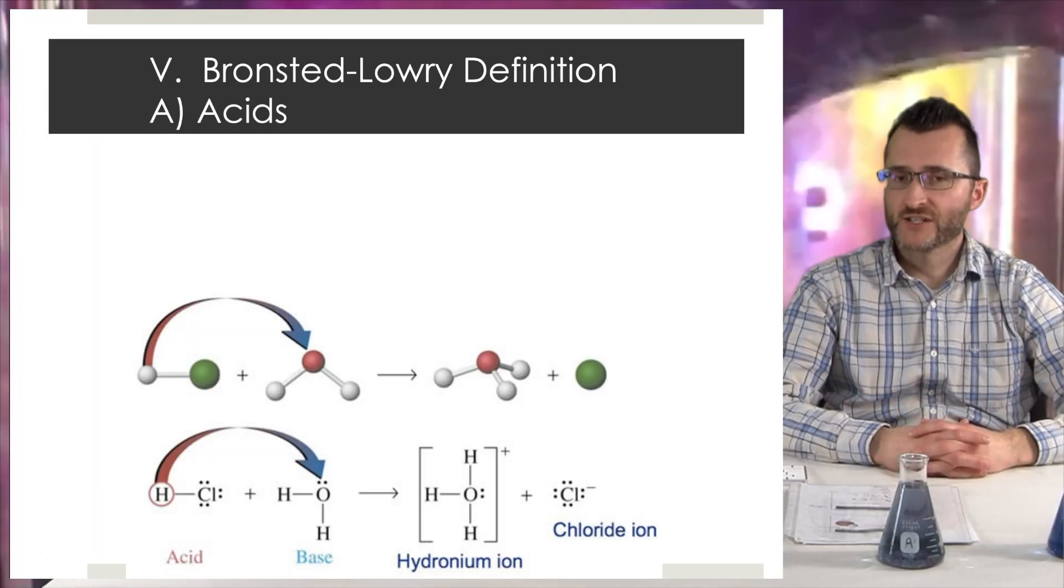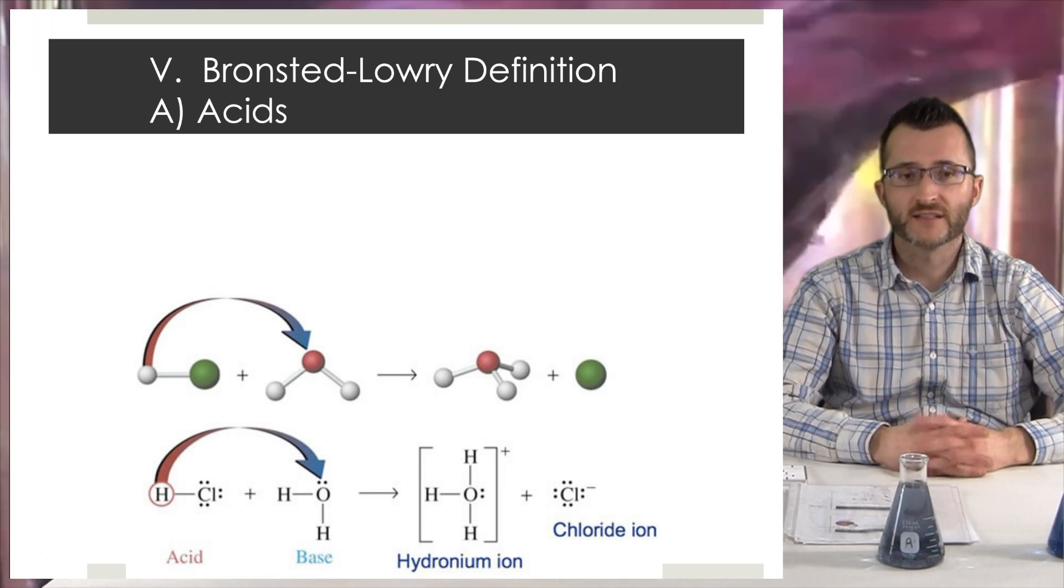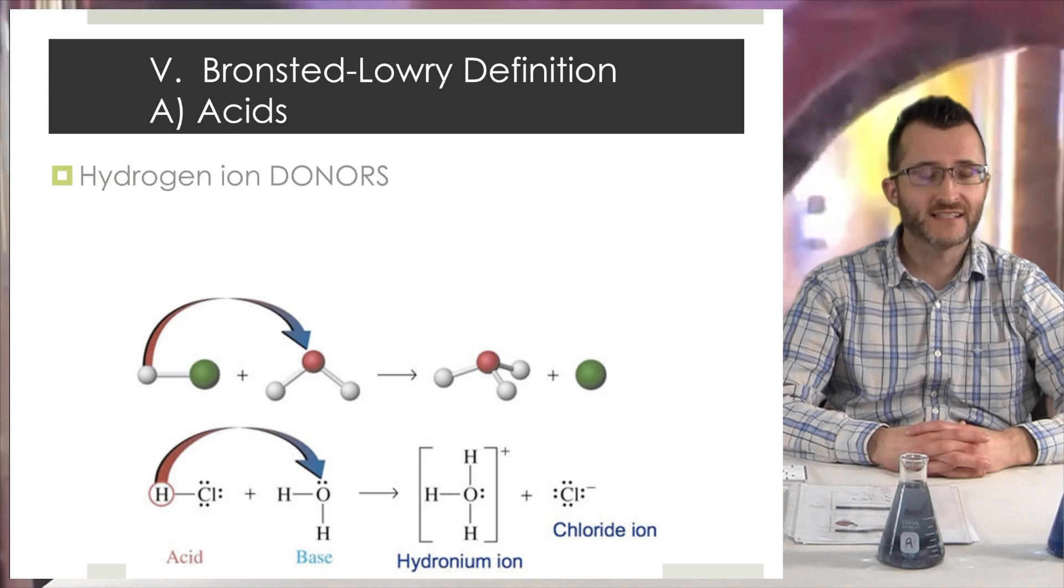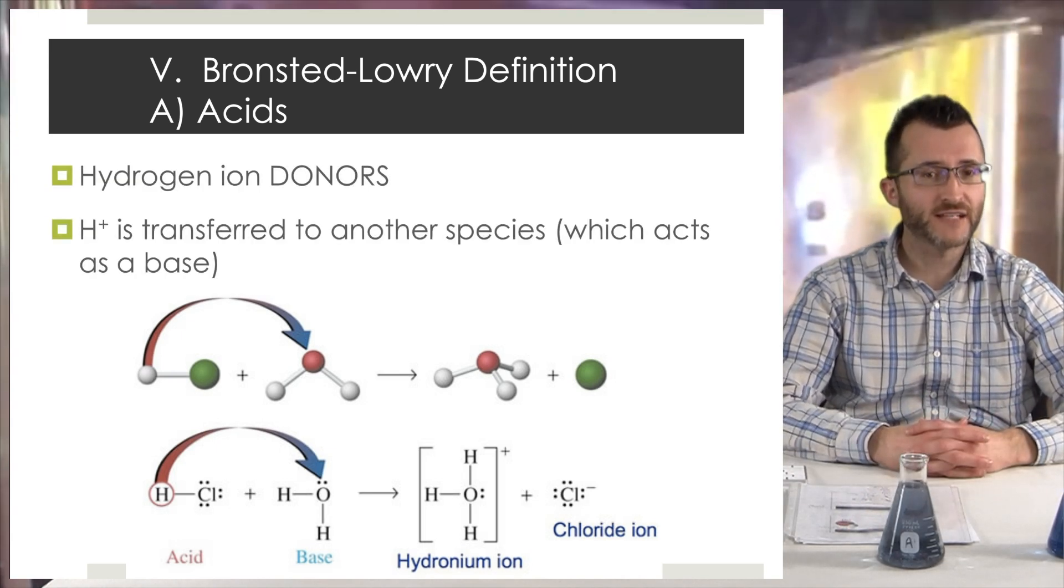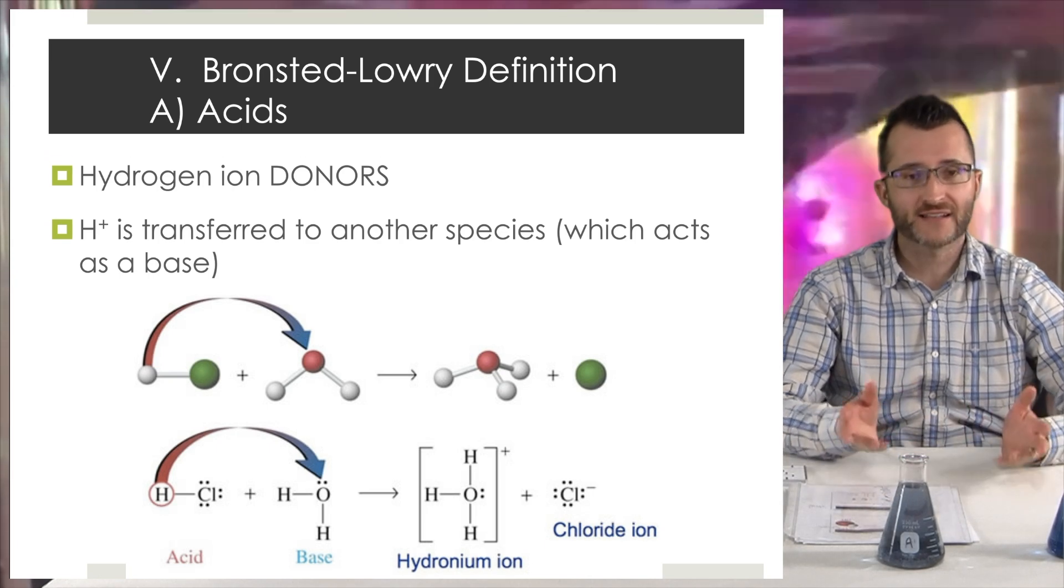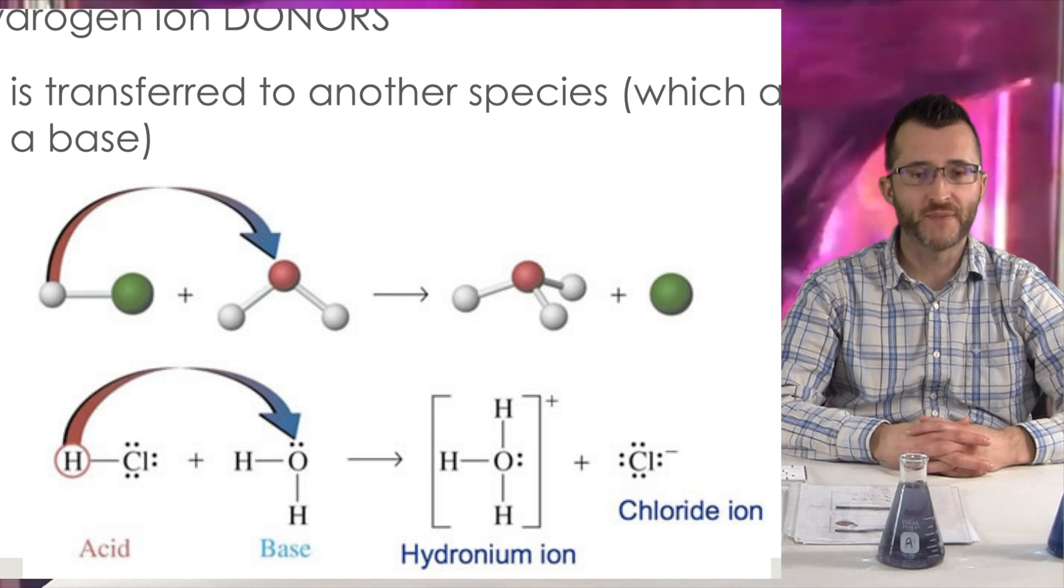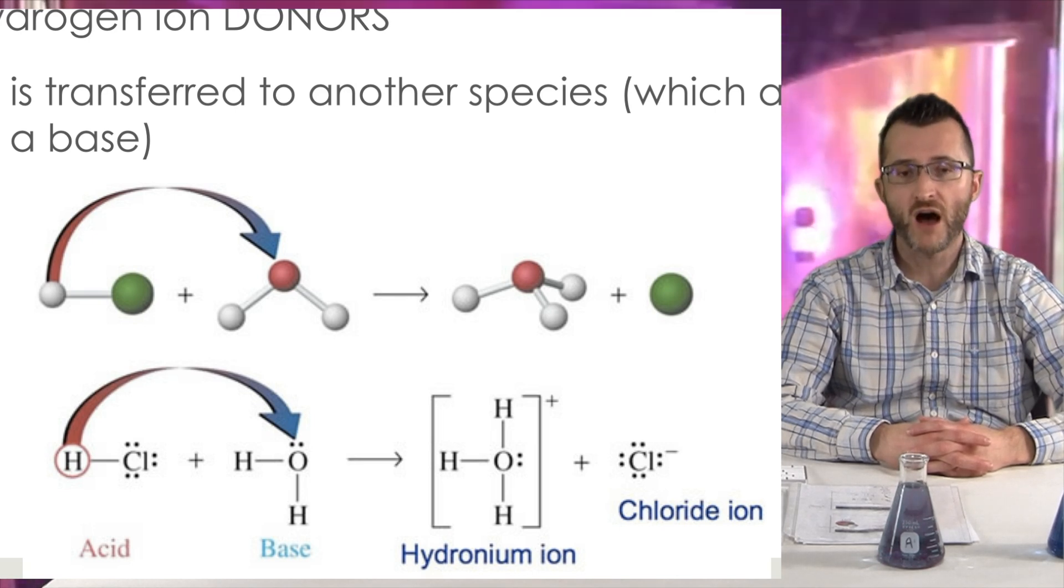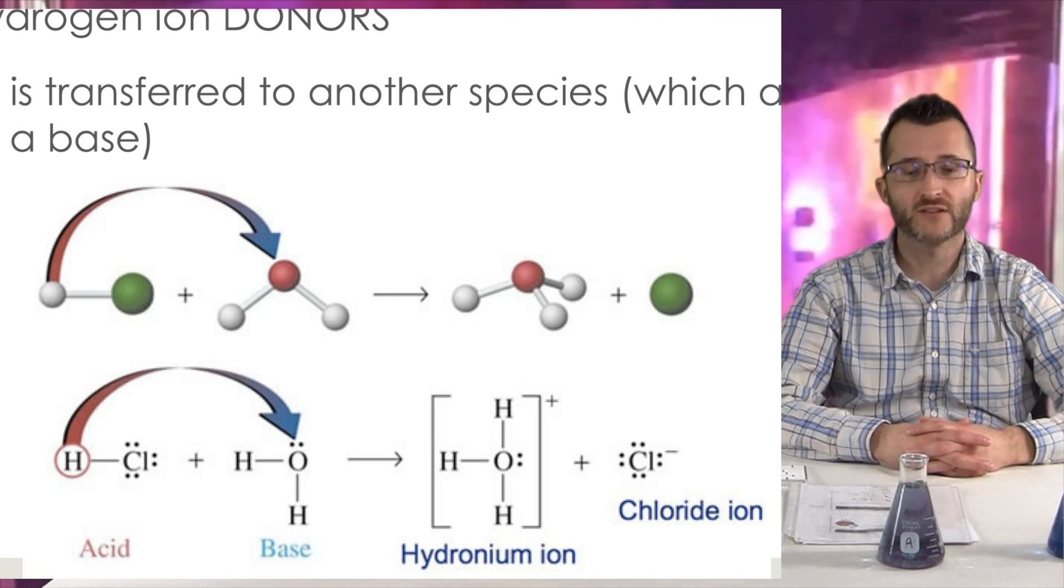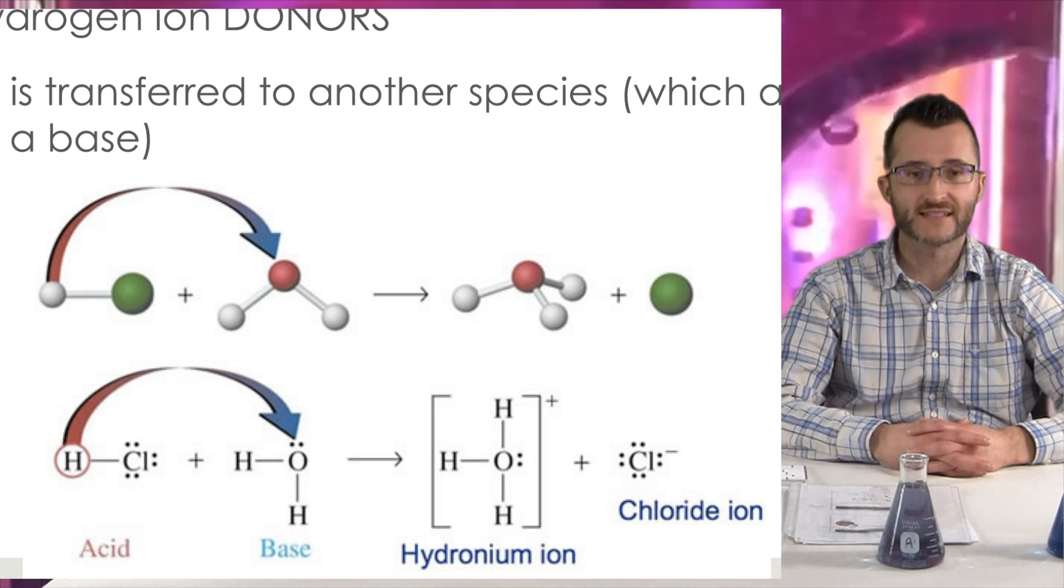We're going to look at some alternate definitions of acids and bases. This one is called the Bronsted-Lowry definition. Let's begin with acids. Acids are defined as hydrogen ion donors. H plus is transferred to another species, which acts as a base. More on that later. If we take a look at our picture at the bottom, we can see that HCl is transferring an H plus to water to make hydronium ion and chloride ion. Because HCl is donating the H plus, that makes HCl a Bronsted-Lowry acid.